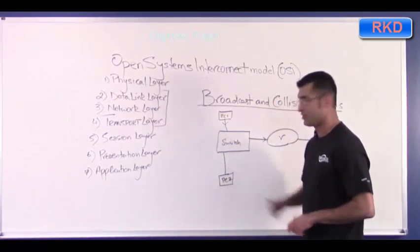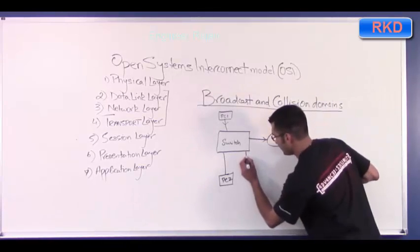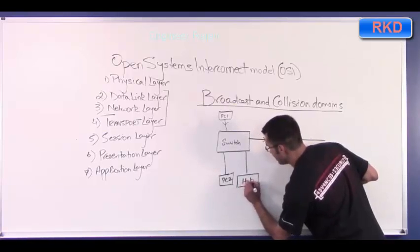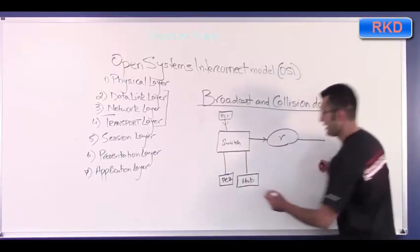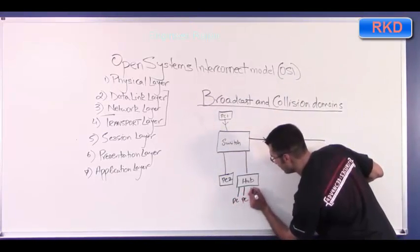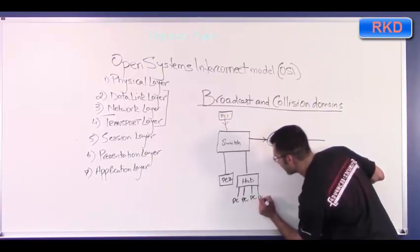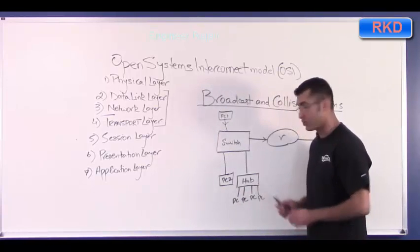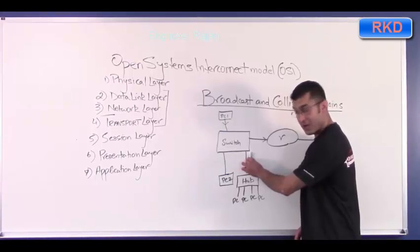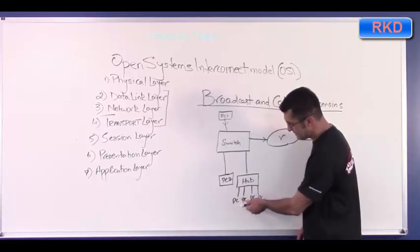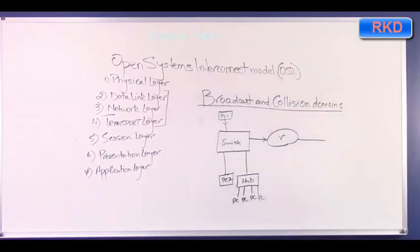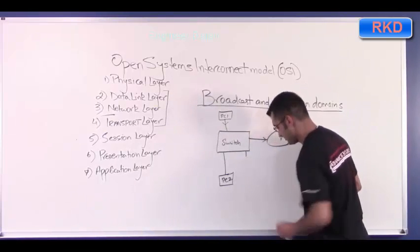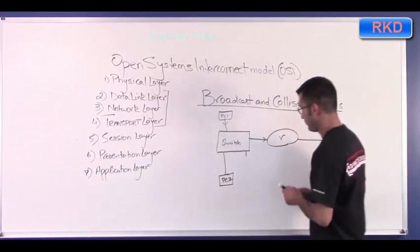However, since each port on a switch is its own collision domain, if a company doesn't have the money and puts a hub on one of the switch ports with a bunch of PCs connected to it, hubs by default are half duplex, so you're going to have collisions when those PCs try to transmit through the hub. This is a scenario I've seen asked on the CCNA exam.